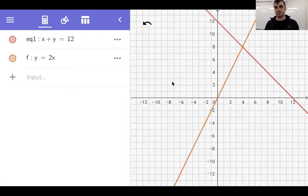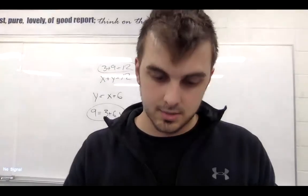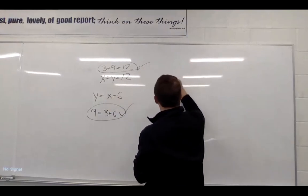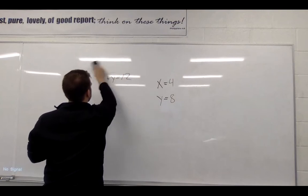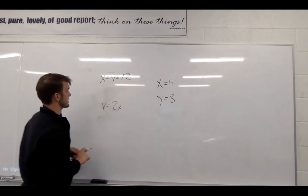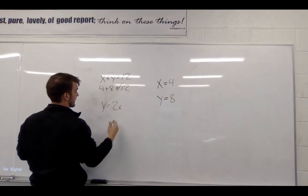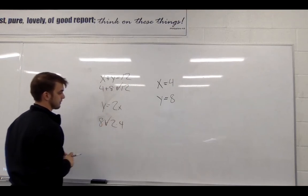The answer for Problem B is x equals 4 and y equals 8. To verify: x plus y gives 4 plus 8 equals 12 — true. And y equals 2x means 8 equals 2 times 4 — yes, that's true. Both equations check out.